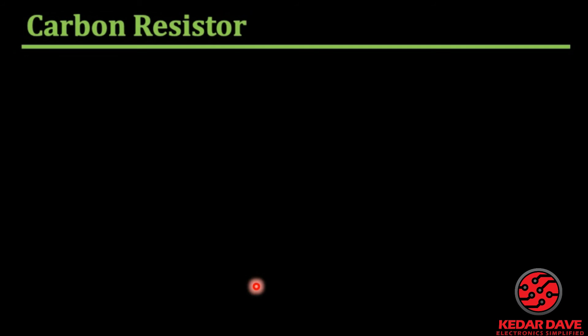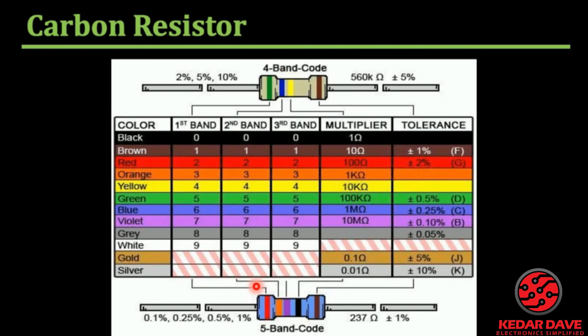Carbon resistors have different types of bands, and all bands carry different values. A basic color code table is shown here. You can see that for different colors we have defined different values. The resistor can use a 4-band code or a 5-band code.